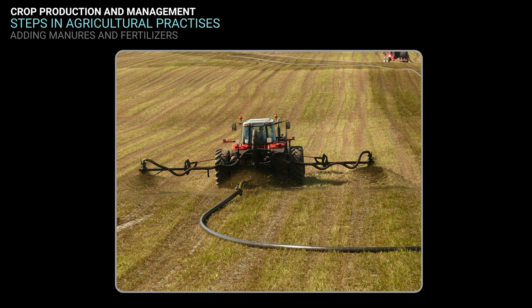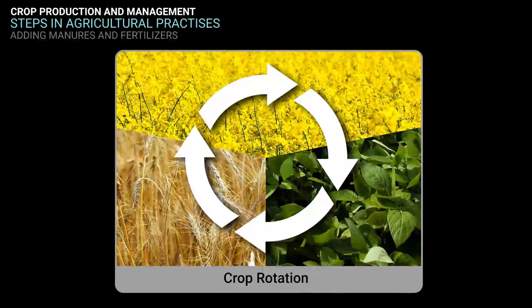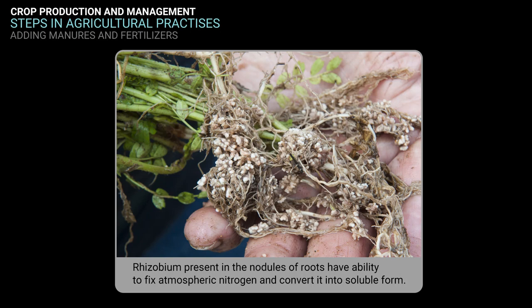Another method of replenishing soil with nutrients is following cropping patterns such as crop rotation — growing different crops alternately on the same piece of land. Farmers grow legumes as fodder in one season and wheat in the next, which helps replenish the soil with nitrogen. A bacterium called Rhizobium is present in the nodules of the roots of leguminous plants; these microorganisms fix atmospheric nitrogen and make it available in the soil by converting it to nitrates and nitrites, which are absorbed by plant roots. Thus, soil gets replenished with nitrogen.